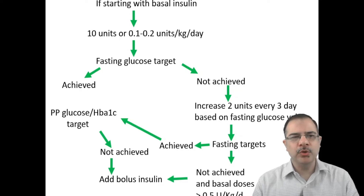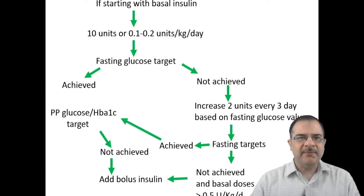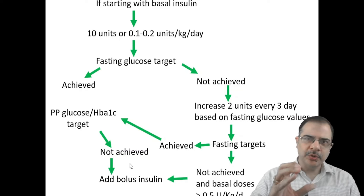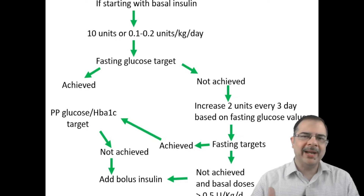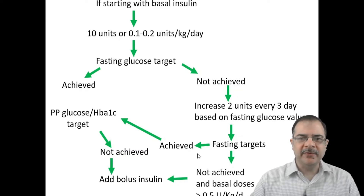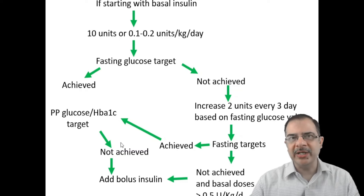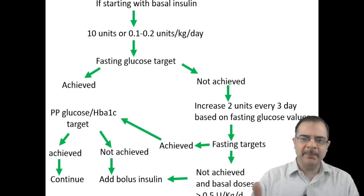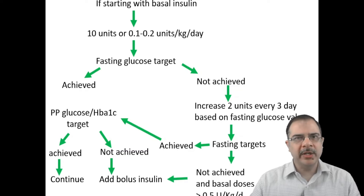In that case, we add bolus insulin. The indications for adding bolus insulin are: targets not achieved even with 0.5 units per kg per day of basal insulin, or fasting targets are achieved but HbA1c targets are still high. If all targets are achieved, continue with the same dose and, depending on patient glycemic response, try to gradually downgrade the insulin doses.